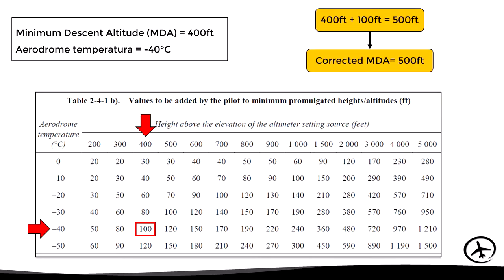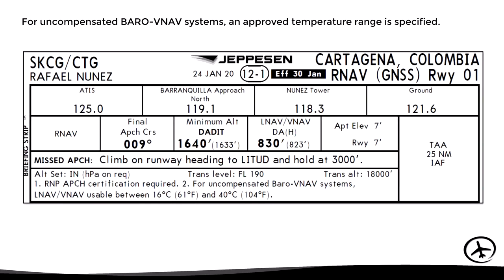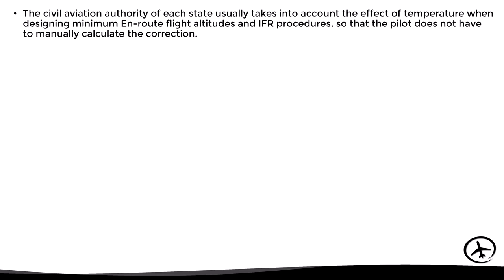You might be wondering when it is required to apply this temperature correction. Most airlines establish specific policies as to when temperature correction should be applied. However, in some cases — such as approach procedures with vertical guidance that use uncompensated baro-VNAV systems — an operational temperature range is specified in the chart. For example, a note may establish that the procedure may be executed without temperature correction provided the temperature is between −16°C and +40°C. If the current temperature is outside this range, the crew must apply the corresponding temperature corrections to all altitudes of the procedure.